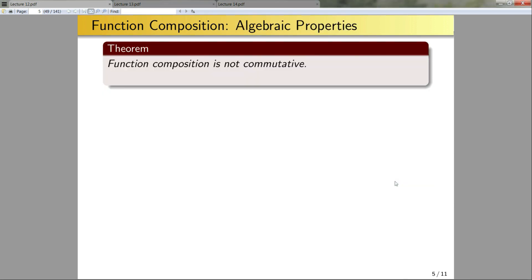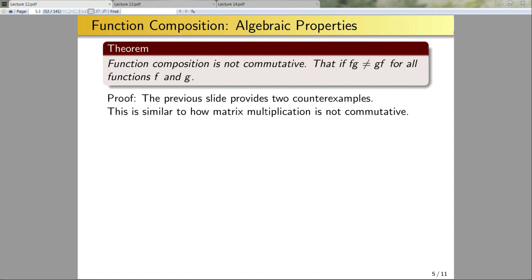So the lesson from these two examples: gf may not equal fg for two reasons. One: one of the compositions might not be defined. Two: we could have a different range, codomain, or the functions could act differently. Let's make a theorem out of this: function composition is not commutative. That is to say, fg is not equal to gf for all functions f and g. Note this is similar to how matrix multiplication is not commutative — swapping the order can cause domain/range mismatches or simply give a different result.